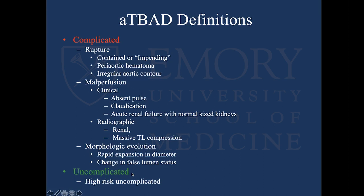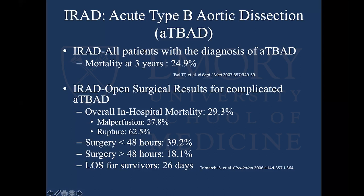The International Registry of Aortic Dissection looked at all patients with acute type B — regardless of whether they were complicated or uncomplicated and how they were treated — and mortality was 25% at three years. When looking at patients who had open surgery for a complicated type B, in-hospital mortality was close to 30%. Those with malperfusion made up about a third, ruptures two-thirds. Emergency OR mortality was 40%; if you could wait, it dropped to 18%. Open surgery is clearly not the ideal treatment for acute complicated type B.